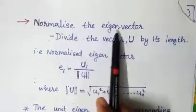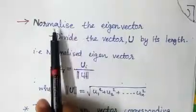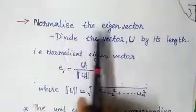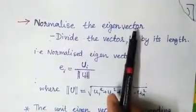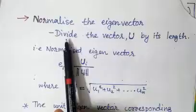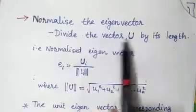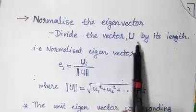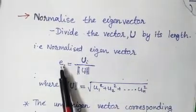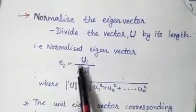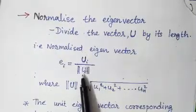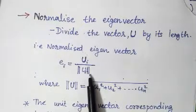Once we have the eigenvector, the next step is to normalize it. Divide the eigenvector U by its length: e_i equals U_i divided by the length of U_i.